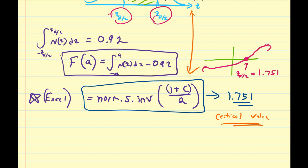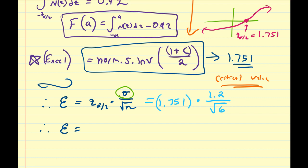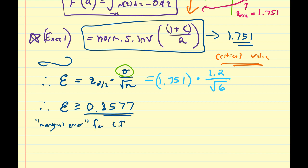From here, we can then calculate the marginal error for the confidence interval. The marginal error is equal to the critical value times the standard deviation of the population divided by the square root of the sample size. Keep in mind here, we cannot use this formula if we do not know sigma, in this case we do so we can proceed. So the marginal error is going to be equal to the critical value we calculated, 1.751, times the standard deviation of the population, which was assumed to be 1.2, over the square root of the sample size, which is the square root of 6. Once you calculate all this out, the marginal error is going to be equal to approximately 0.8577.